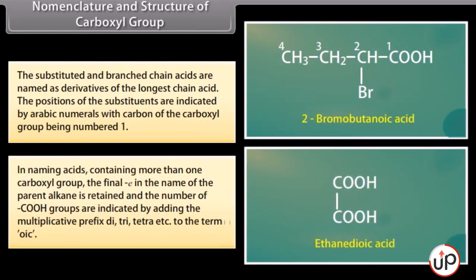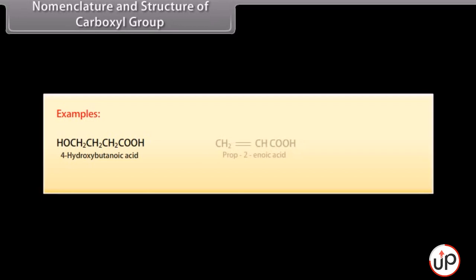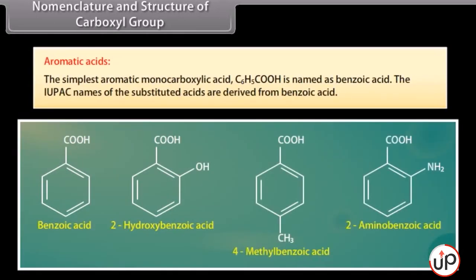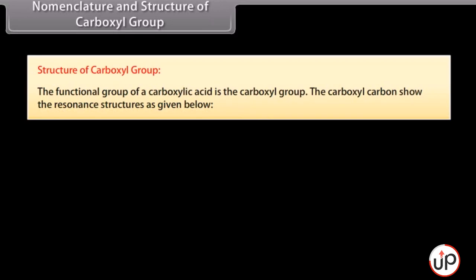In naming acids containing more than one carboxyl group, the final 'e' in the name of the parent alkane is retained and the number of carboxyl groups are indicated by adding the multiplicative prefix di-, tri-, tetra-, etc., to the term 'oic'. Examples: 4-hydroxybutanoic acid, prop-2-enoic acid, propanedioic acid. For aromatic acids, the simplest aromatic monocarboxylic acid C6H5COOH is named benzoic acid. The carboxyl group shows resonance structures.